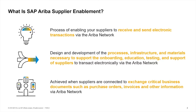First, what is SAP Ariba Supplier Enablement? Supplier enablement is the process of registering and enabling your suppliers to send and receive electronic transactions like purchase orders, order confirmations, advance ship notices, and invoices. This requires a well-defined process that leverages a strong infrastructure with support materials to assist your suppliers throughout the entirety of the process. Supplier enablement is successful once a supplier is able to send and receive electronic documents via the Ariba network.